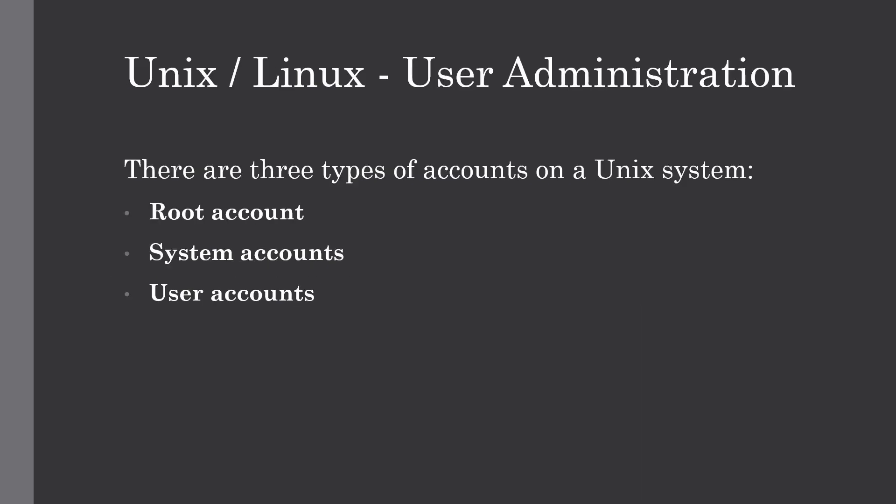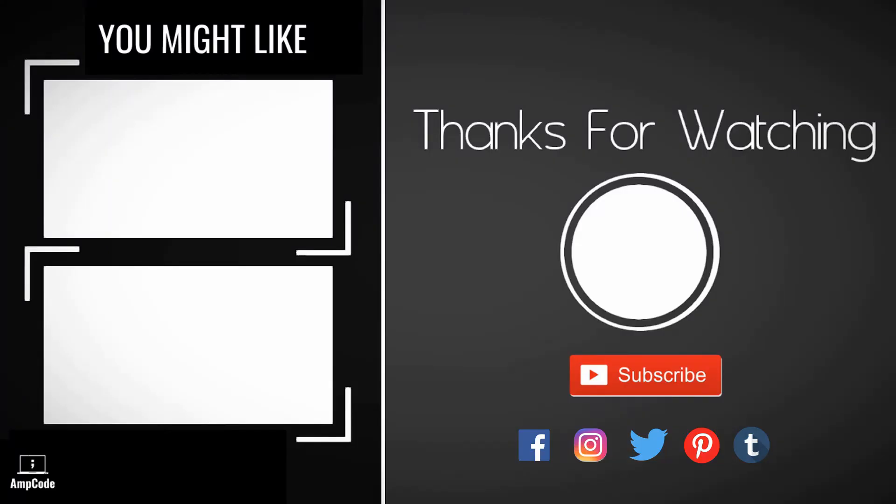That was all about the basic concepts of user administration in a Unix system. We covered the three major types of accounts — root account, system account, and user account — along with the main user administration files. We then saw how to create, modify, and delete groups, and similarly how to create, modify, and delete accounts with their different options. I hope you liked this lecture.